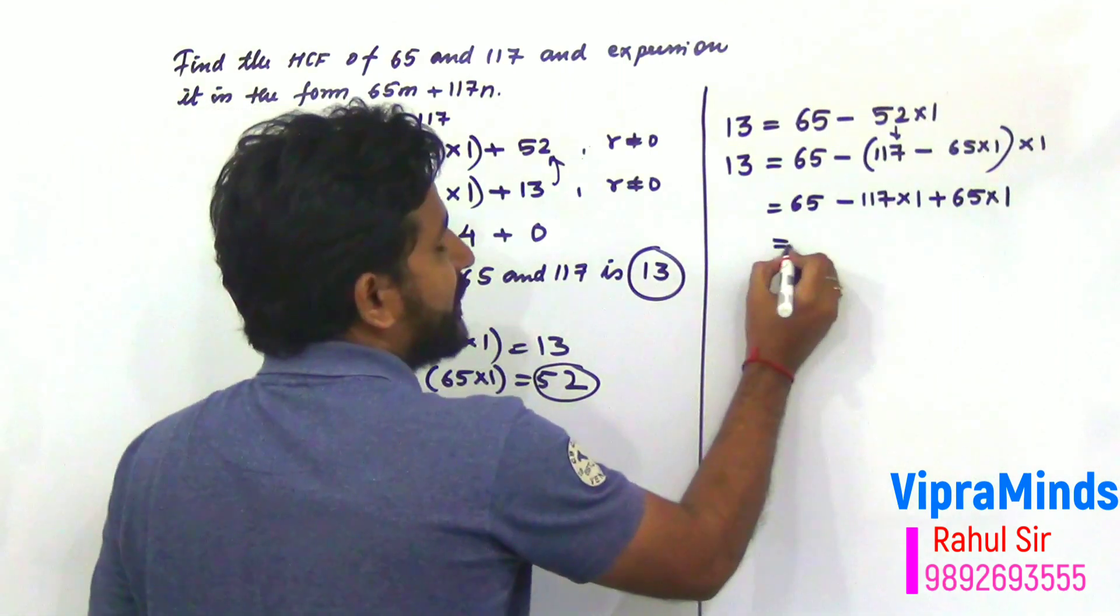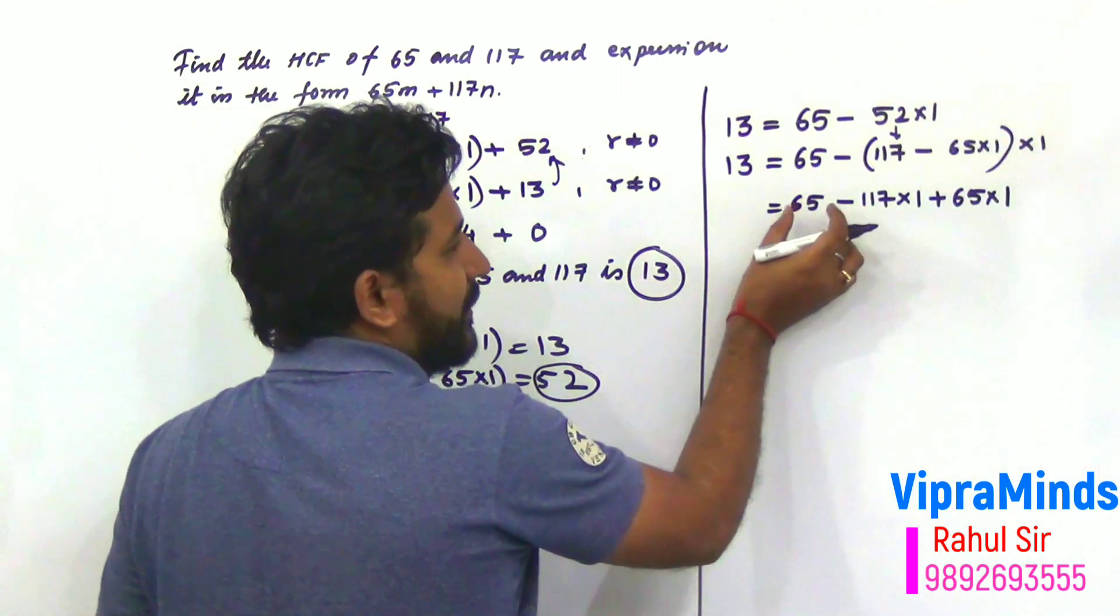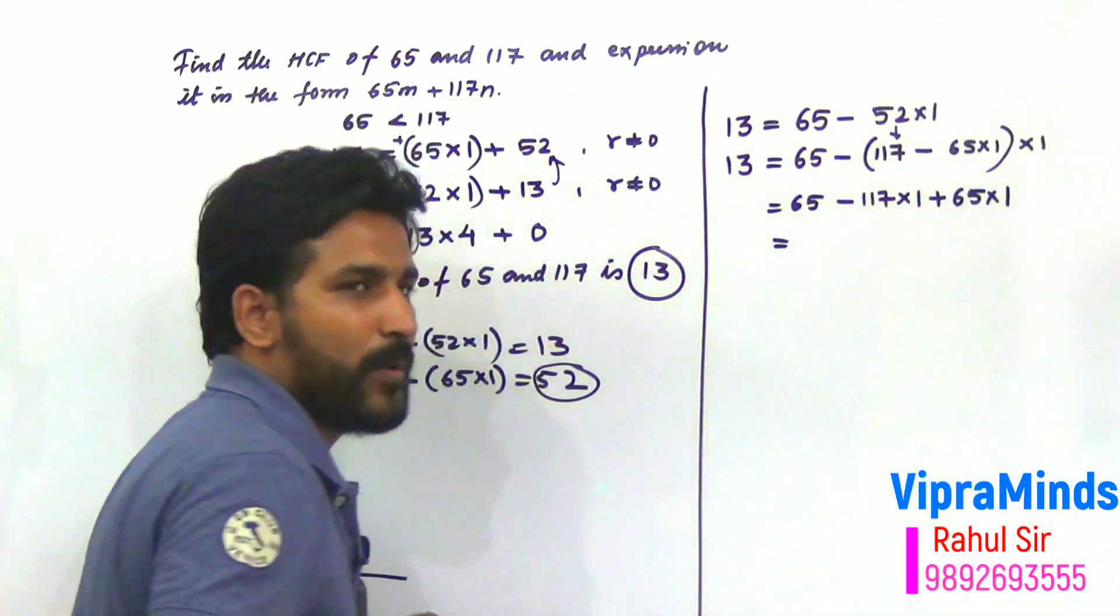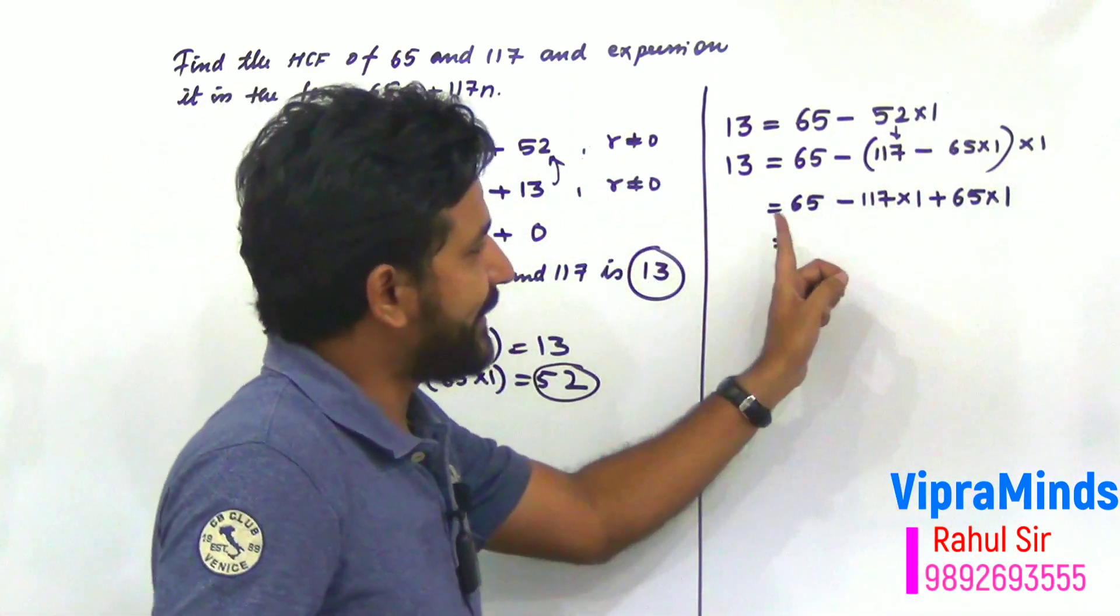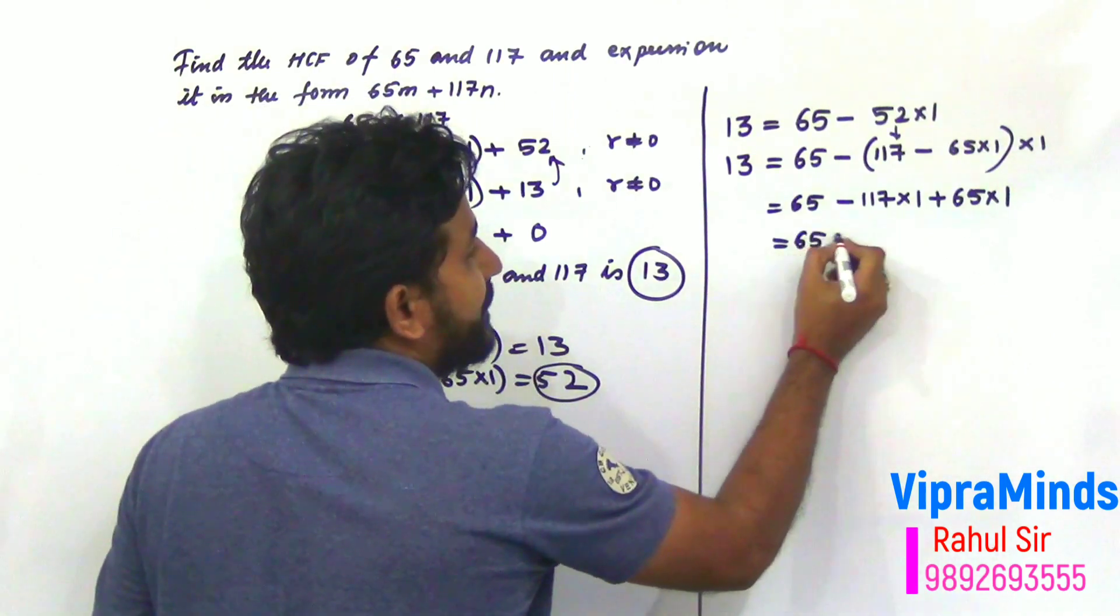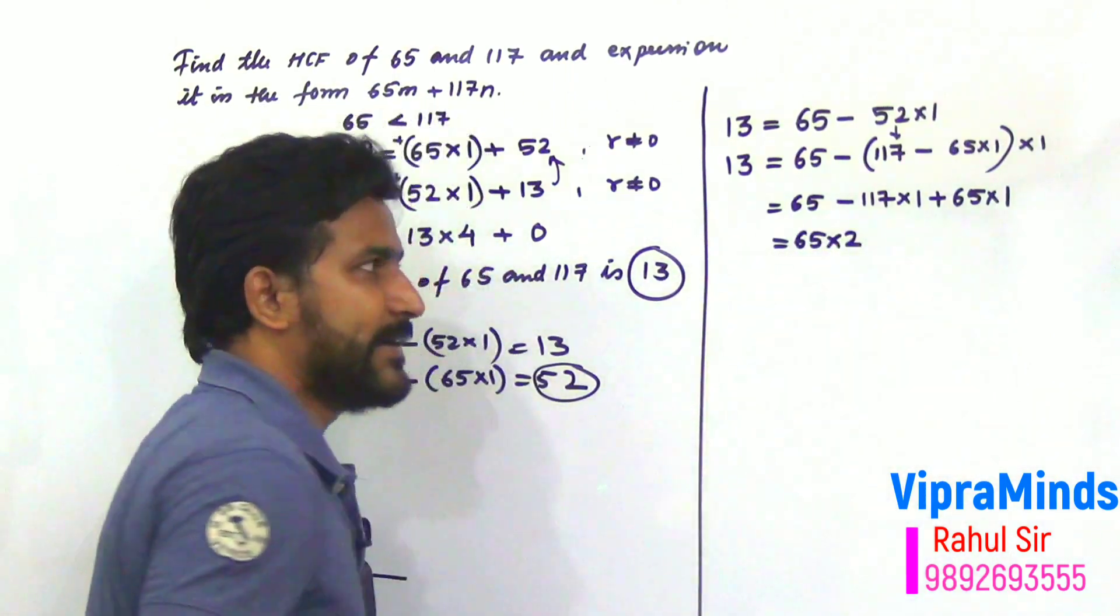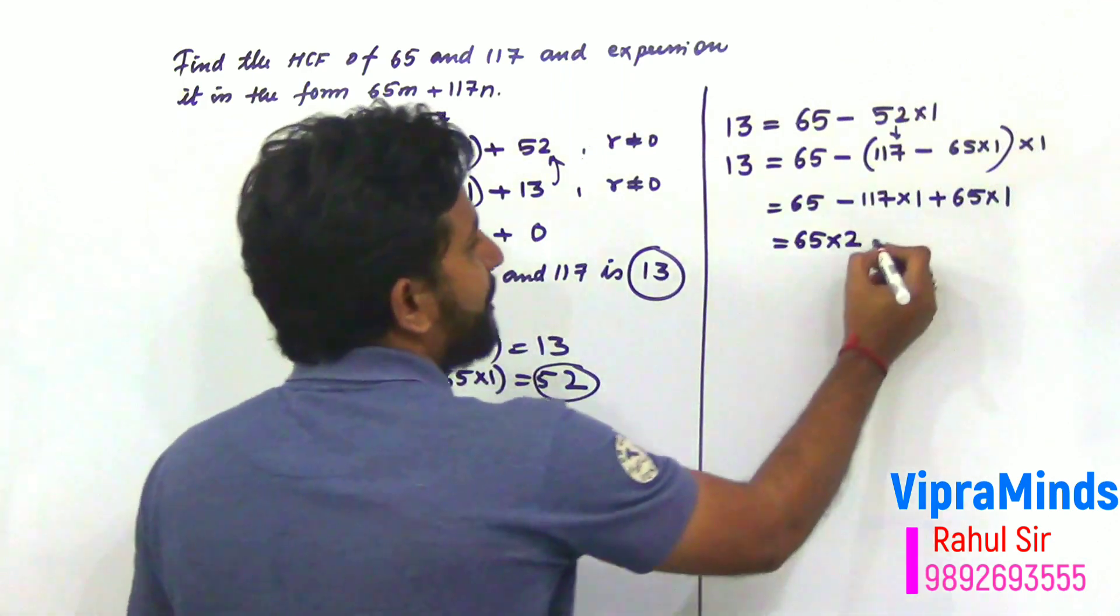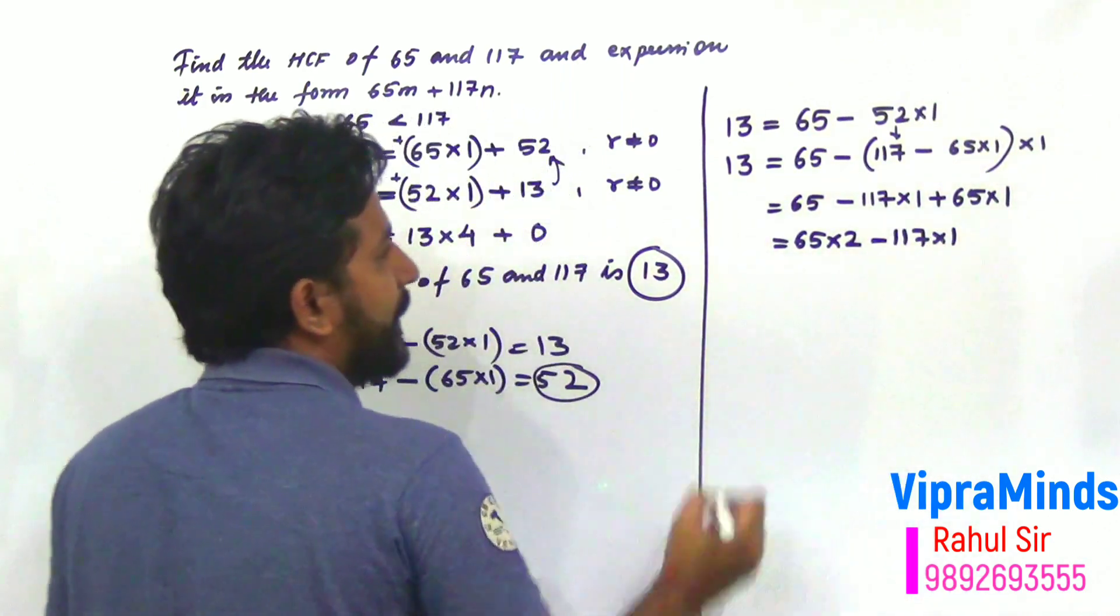Now, the next step is 65 into 1. That means what? Here 65 is one time, here also one time. So, it is total two times. So, it will be 65 into 2.